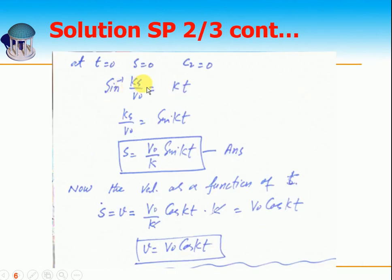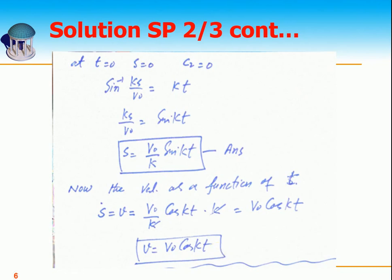We found S = (V₀/k)·sin(kt). Now for velocity as a function of time, we take the first derivative of displacement: V = dS/dt. V₀/k is constant, derivative of sin(kt) is cos(kt) times k. The k's cancel, giving V = V₀·cos(kt). It is clear that the velocity oscillates as a cosine function. I hope this question is clear.